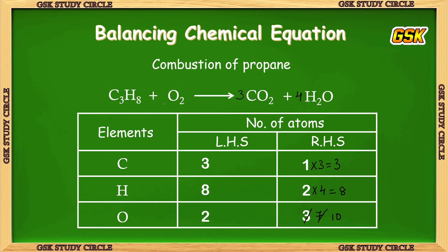The atoms on LHS and RHS are now balanced. Carbons: LHS 3 and RHS 3. Hydrogens: LHS 8 and RHS 8. Oxygens: LHS 10 and RHS 10. The equation is fully balanced.